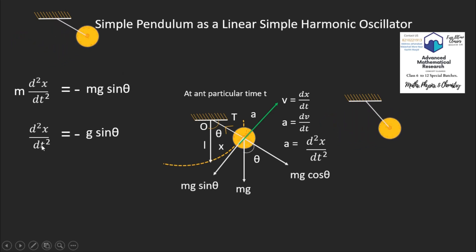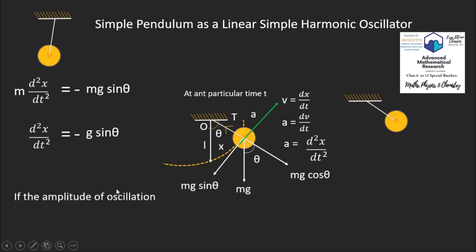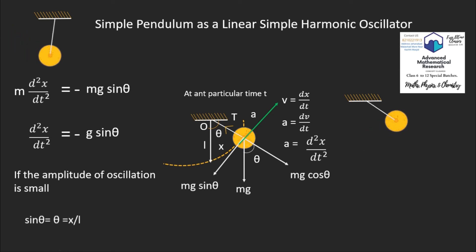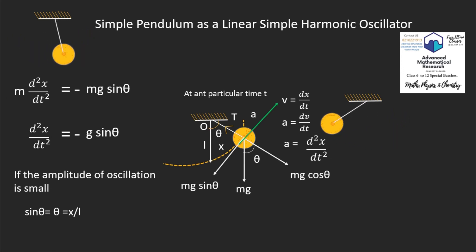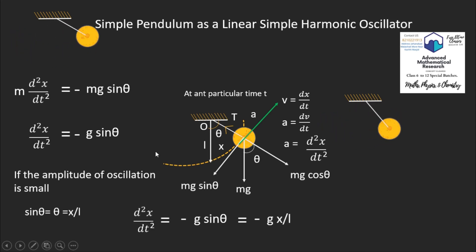Mass m cancels from both sides, giving d²x/dt² = −g sinθ. For simple harmonic motion, θ is very small, so we apply the small angle approximation: sinθ ≈ θ. Also, θ equals the arc length x divided by the radius L, so θ = x/L. Therefore: d²x/dt² = −(g/L)·x.